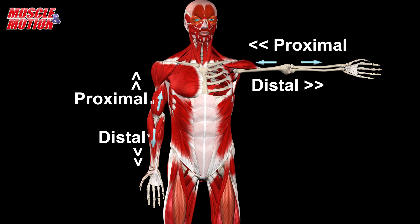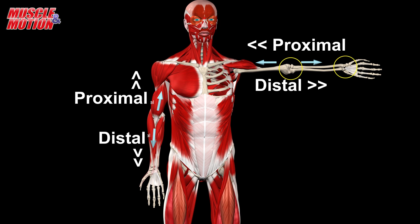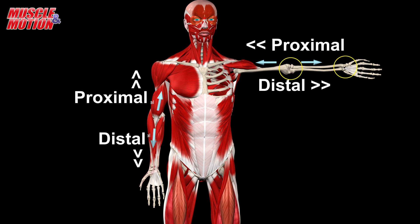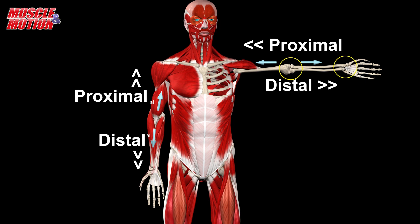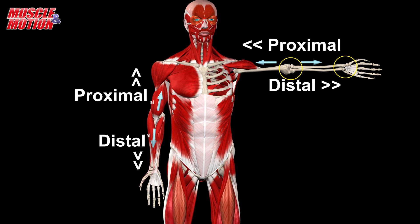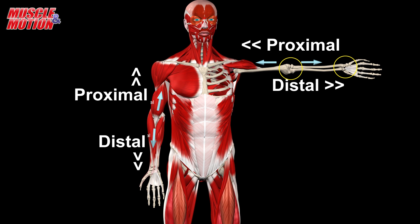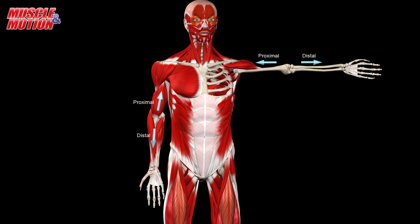Proximal: closer to the origin or point of reference. For example, the elbow is proximal to the wrist. Distal: further from the origin or point of reference.